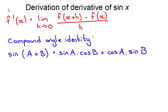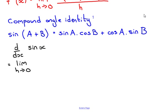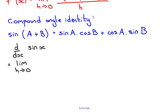Let's start our derivation. We want to find the derivative with respect to x of sine x, starting with the limit definition of the derivative — so we're doing it from first principles. We have the limit as h tends towards zero of our function with x replaced by x plus h, so we get sine of x plus h minus sine of x, all divided by h.